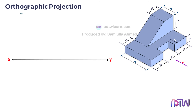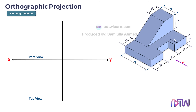Before starting the drawing, we need to draw the reference line, which is the XY line. Since we are following the first angle method, on the top the front view will come, and on the bottom the top view will come. Next, we need to draw a vertical line which we will name X1Y1. The left side view of the object is drawn on the right side, as we are following the first angle method.